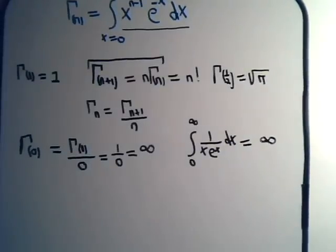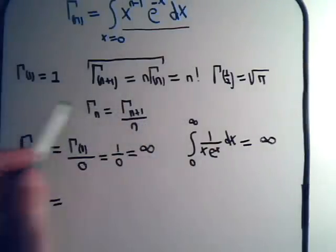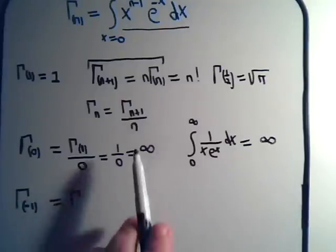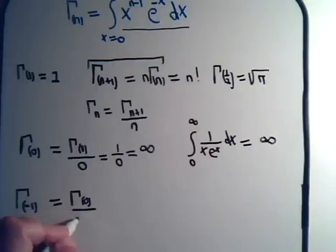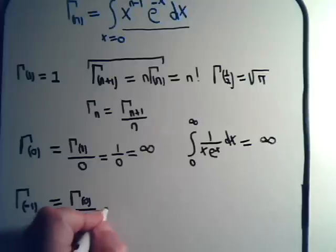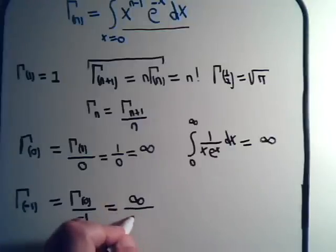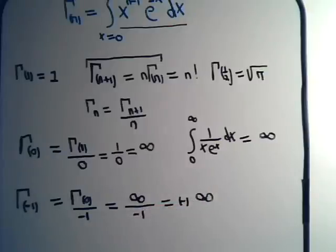What would the gamma function of a negative number be like? Suppose we had the gamma function of negative 1. Using this formula, that would equal the gamma function of negative 1 plus 1 — which is gamma of 0 — divided by negative 1. So this equals infinity divided by negative 1, which equals minus infinity.